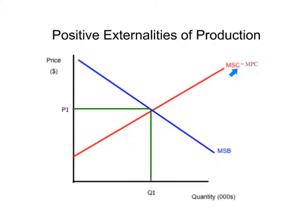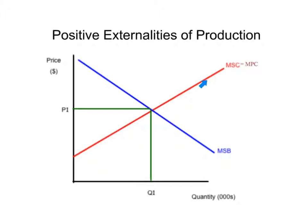With positive externalities of production, the marginal social costs are going to be greater than the marginal private costs. The production of high-quality training for employees — like a teacher going off to IB training — means the marginal private cost is what the school pays for the training. But the marginal social cost, the benefit to society as a whole from having one more teacher trained in IB economics, is a benefit to society. So we'll see the marginal social cost curve moving downward while the marginal private cost remains where it is.